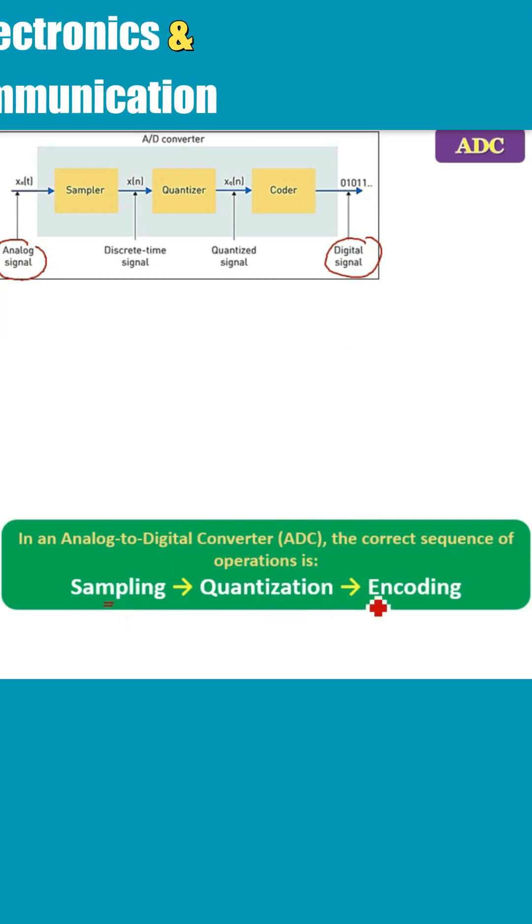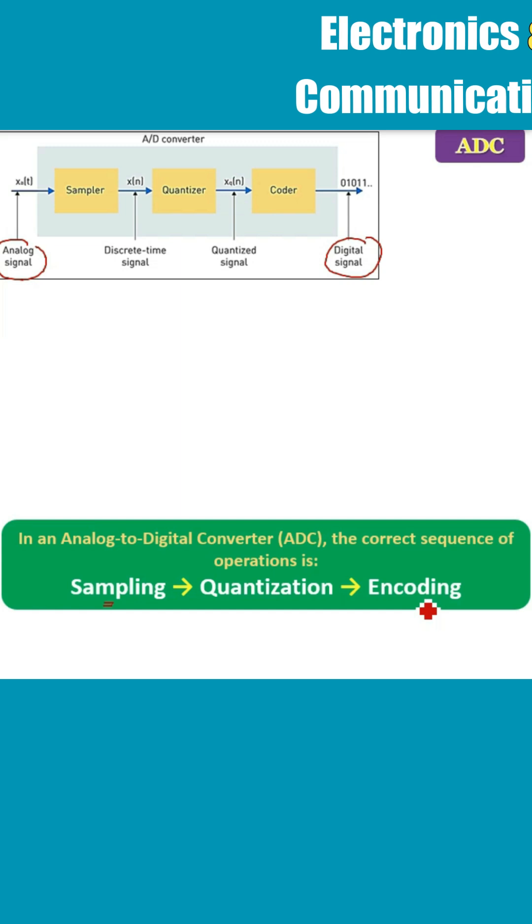For this, in analog to digital converter, the correct sequence is sampling, then quantization, then encoding.